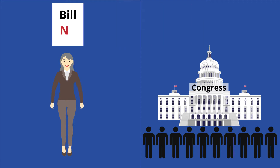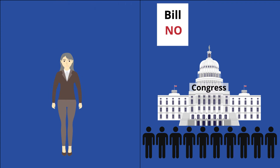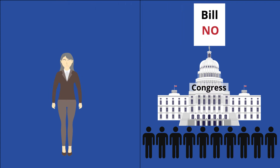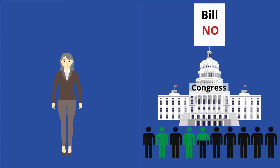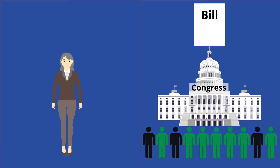When the president refuses to sign a bill that Congress has passed, Congress can attempt to override that decision. Both the House of Representatives and the Senate need to pass the veto with a two-thirds majority, or supermajority vote. As of 2020, only 7.1% of presidential vetoes have been overridden, demonstrating its difficulty.